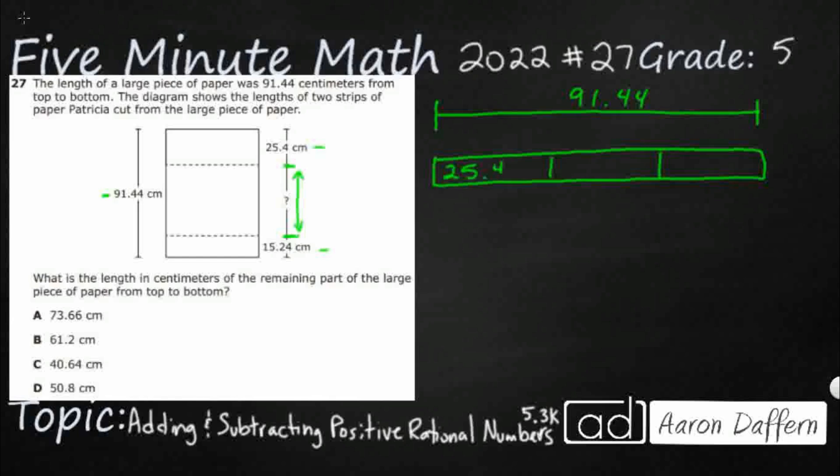They're not proportional here, but I'm going to put the two chunks I know right here: 25.4, 15.24. So I'm missing this third chunk right here. You see that we are just going to add these three together. But I think an easier way to do it would be to tackle it this way. Let's figure out what this chunk is right here first, and then we can see how far away that is from 91.44.